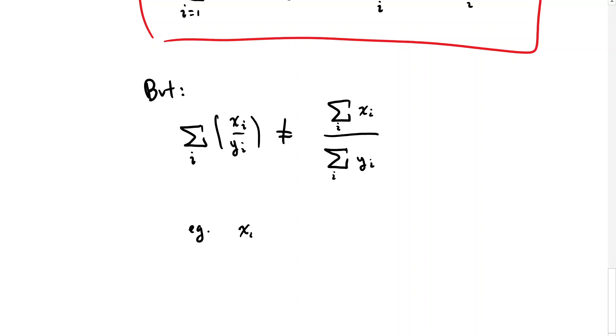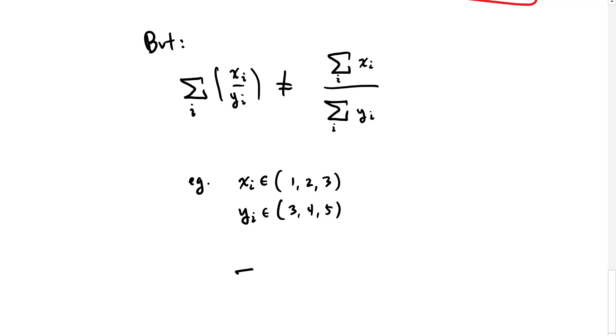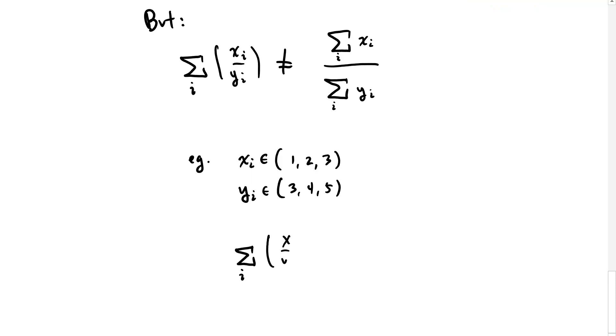If xi contains the numbers 1, 2, and 3, and yi contains the numbers 3, 4, and 5, if we sum xi over yi, that's going to be 1 third plus 2 fourths plus 2 fifths. We're taking the first number from each, the second number of each, and the third number from each and adding them together through this summation.